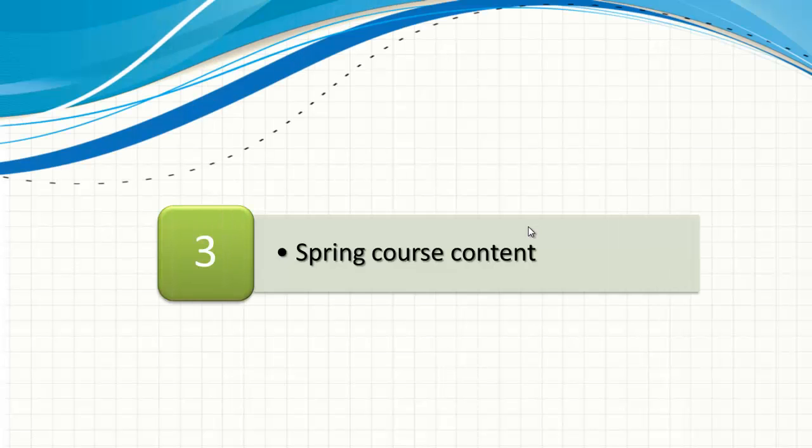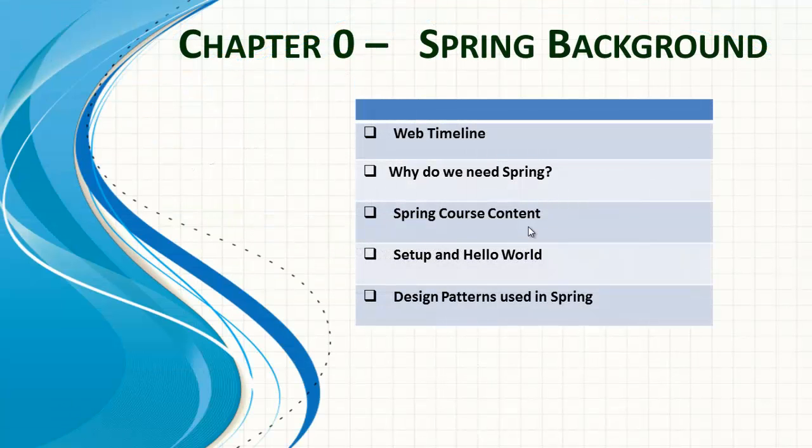Hello and welcome to Spring 3.0 training. In this video we are going to see the course content that is being covered and the various chapters that are offered. There are a total of seven chapters. The first chapter has been named Chapter 0, which talks about the Spring background — how we reached the Spring world, starting from the first browser and first web server, and how Spring evolved from the CGI/Perl days.